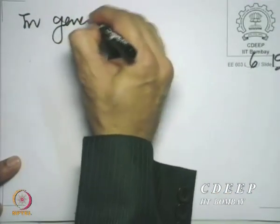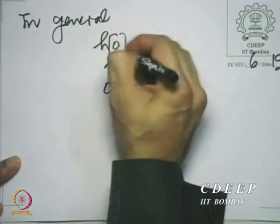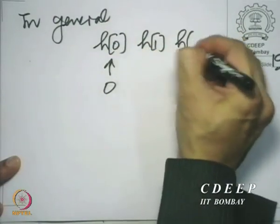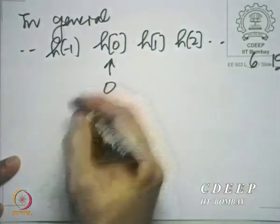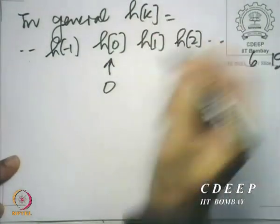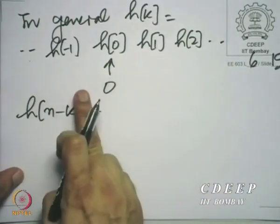So it really means you are making a mirror image of that sequence with the mirror placed at k equal to 0. Remember, the sequence that you are mirroring is h[k+n]. We are mirroring h[k+n], and we can now visualize what to expect. In general, when you have at 0 something like h[0], h[1], h[2] and so on, and h[minus 1] going behind, that is the sequence h[k]. Then h[n-k] is going to be obtained by shifting this backward by n.